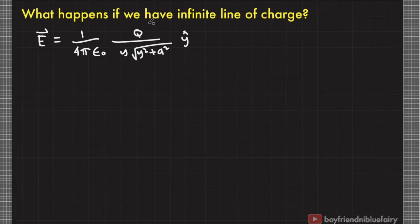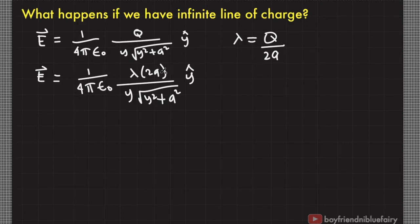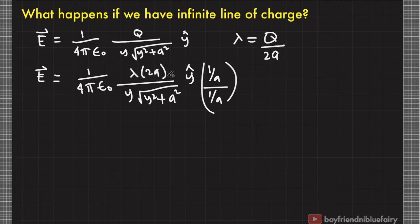Let's rewrite this equation in terms of line charge density, because when you have an infinite line of charge, what matters is the line charge density and not the total charge Q. Remember that lambda equals Q over 2a. I'll multiply the equation by 1, written as (1/a) divided by (1/a), to eliminate the variable a, since 2a is the length of the line segment. Because we are extending the line of charge from positive infinity to negative infinity, we want an expression that doesn't contain the variable a. We will be replacing a with infinity and using L'Hôpital's rule.